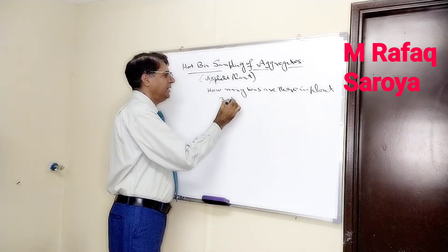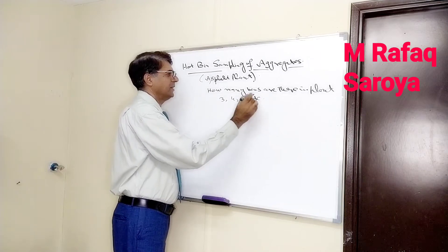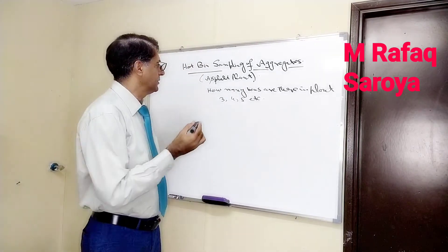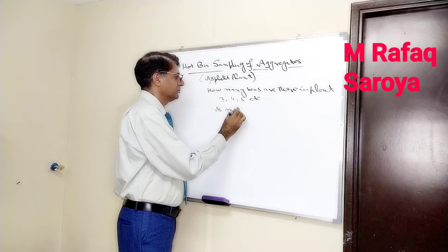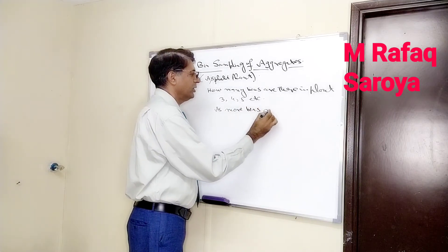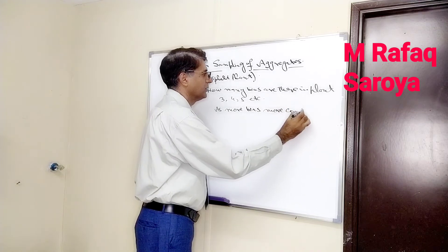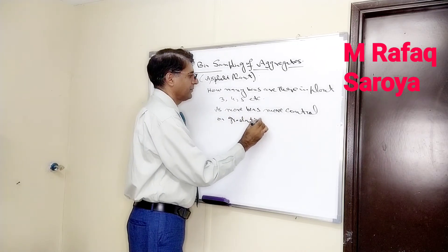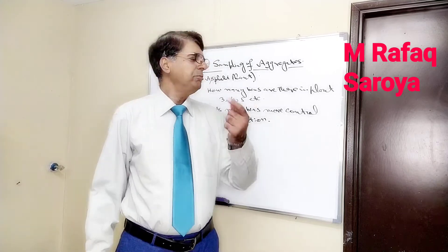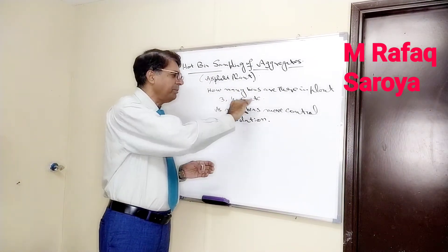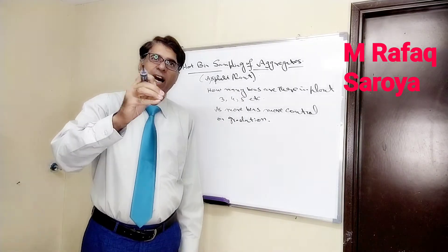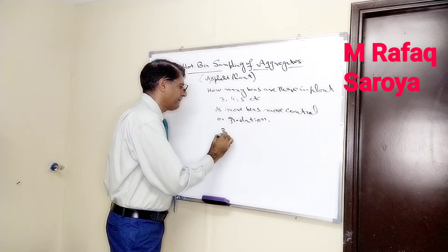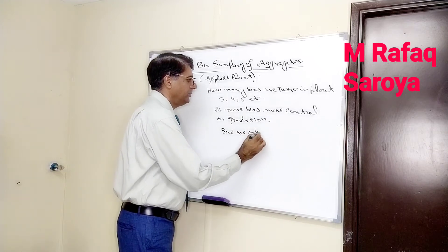The number of bins can be a minimum of 3, it can be 4, it can be 5, and so on. As more number of bins are present, there is more control on gradation. One important thing — filler is always added separately. So keep in mind that the bins are only for aggregates.